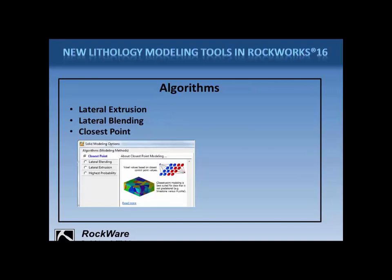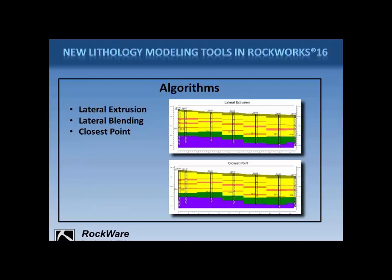The closest point method was added in Rockworks 15, and it assigns voxel nodes using the closest point in any direction. This is different from the above methods which extrude the lithotypes laterally. This may look much like the lateral extrusion method, but where you will see difference is at the bottom of the model or where there are data gaps. In this example, I've added green material at the base of these holes. Closest point will limit the influence of these materials to the nodes closest to the logs, whereas lateral extrusion will extrude the green material laterally.